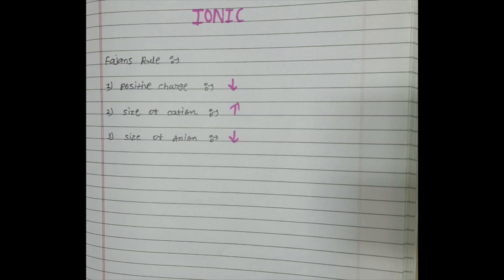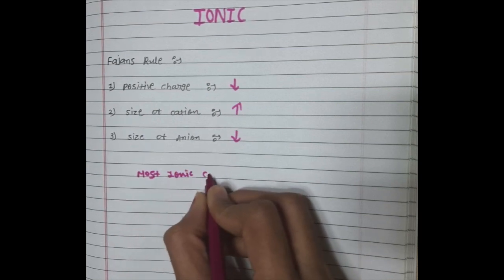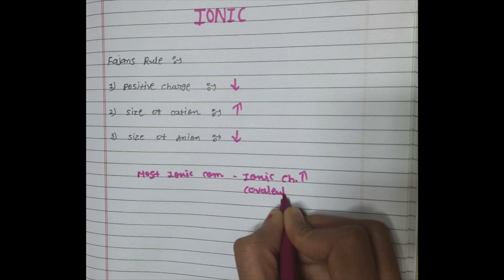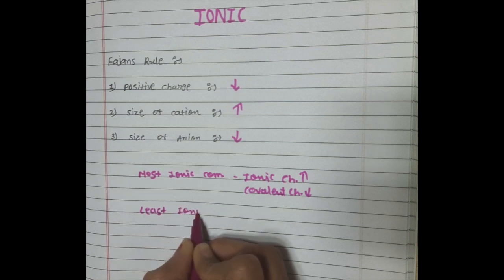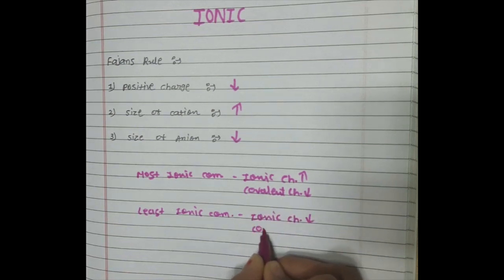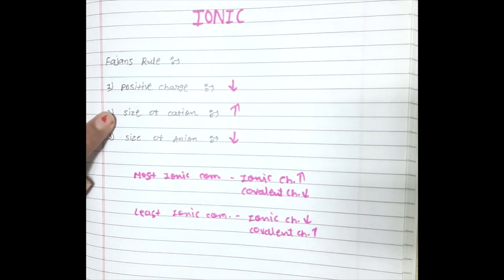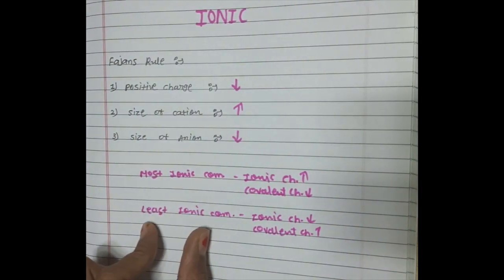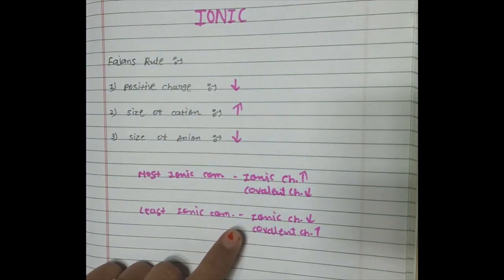In the two examples we found the most ionic compound. The most ionic compound means ionic character is more and covalent character is less. The least ionic compound means ionic character is less and covalent character is more. So the three criteria — positive charge decrease, size of cation increase, size of anion decrease — apply to the most ionic compound. For the least ionic compound, these three are the opposite: positive charge increase, size of cation decrease, and size of anion increased.